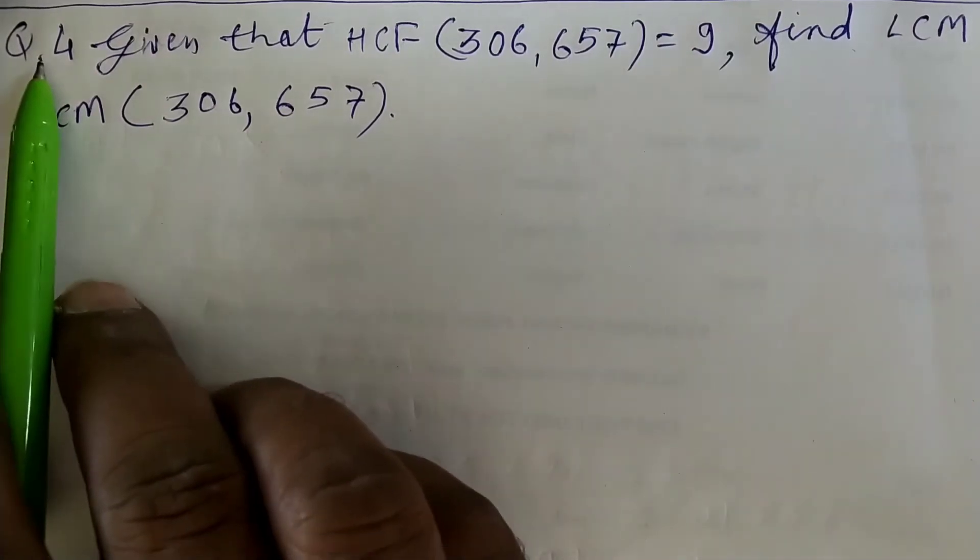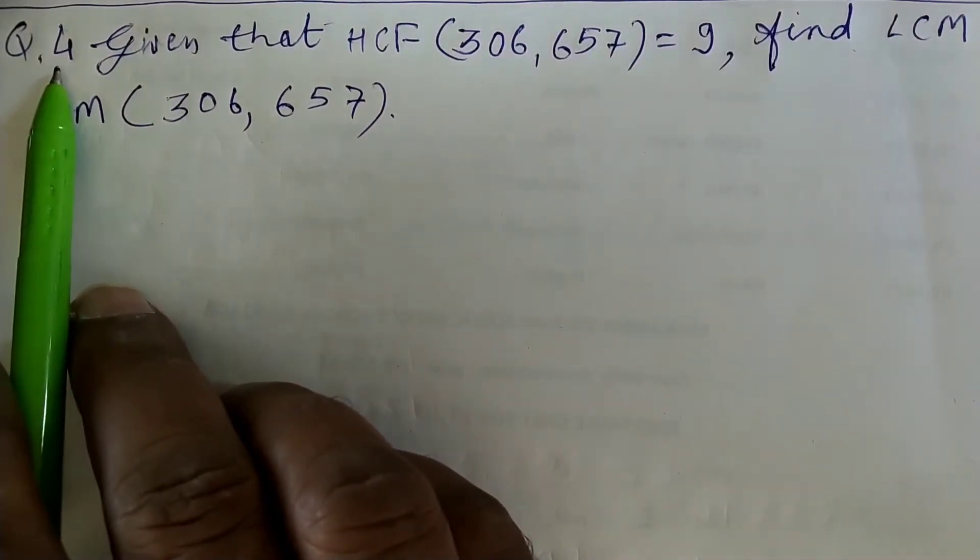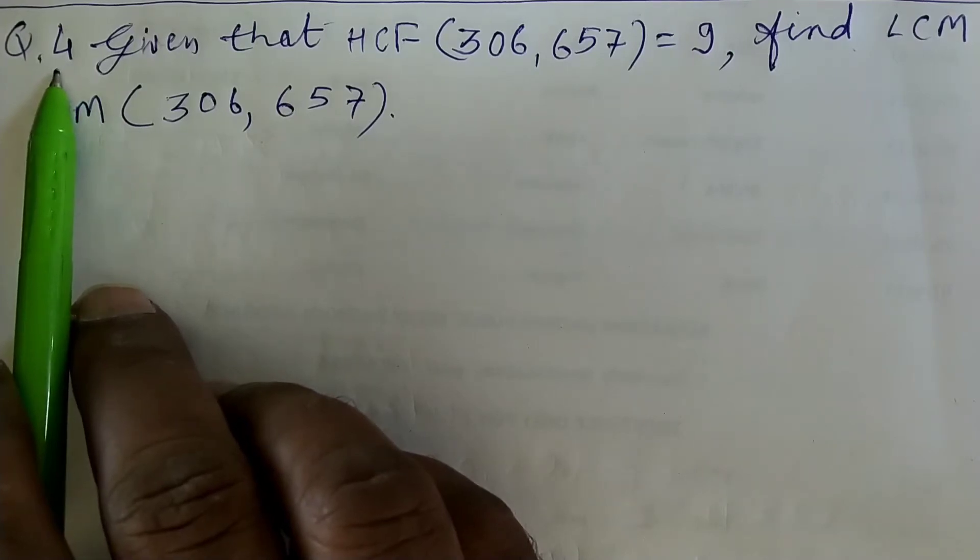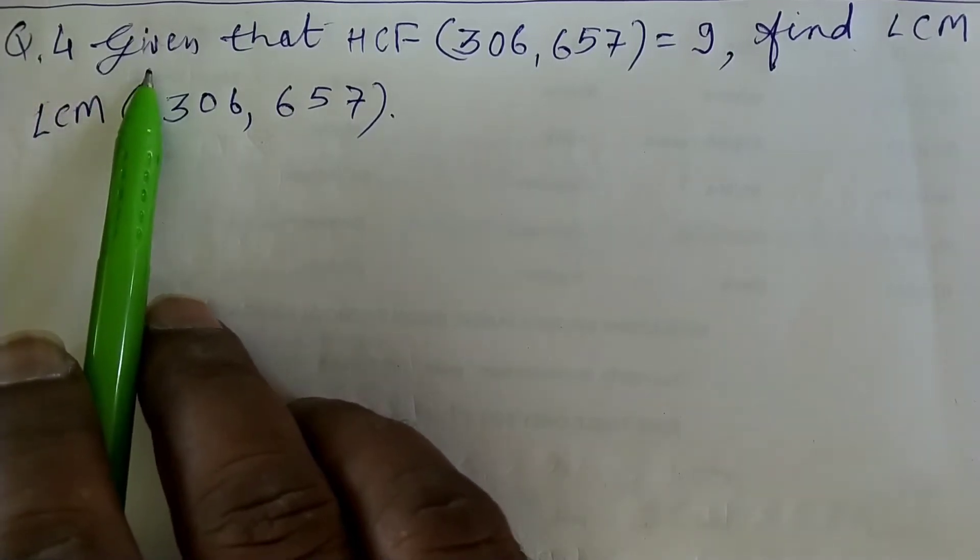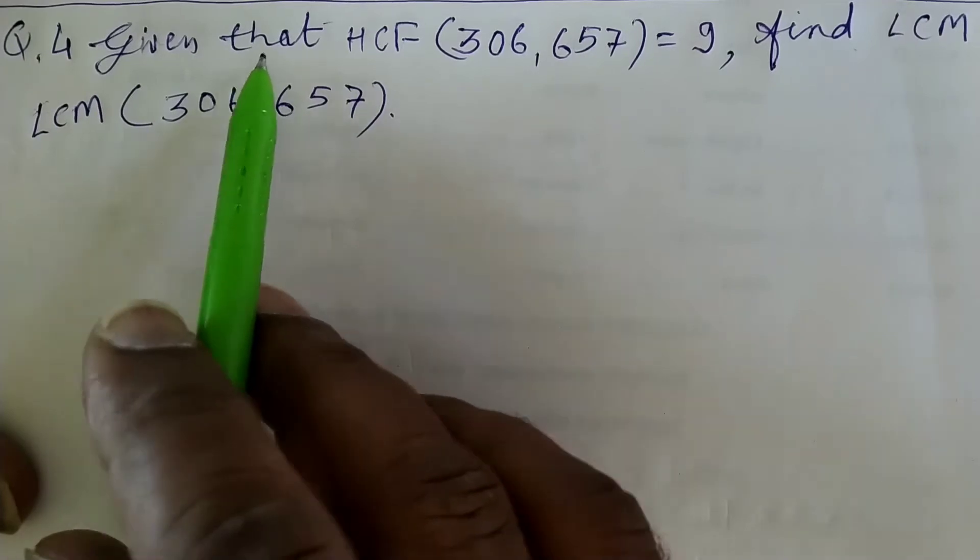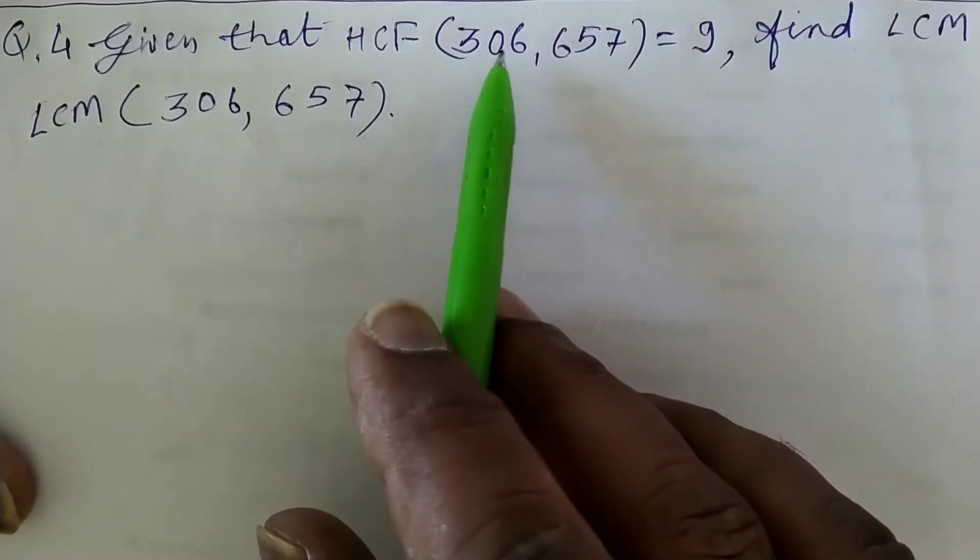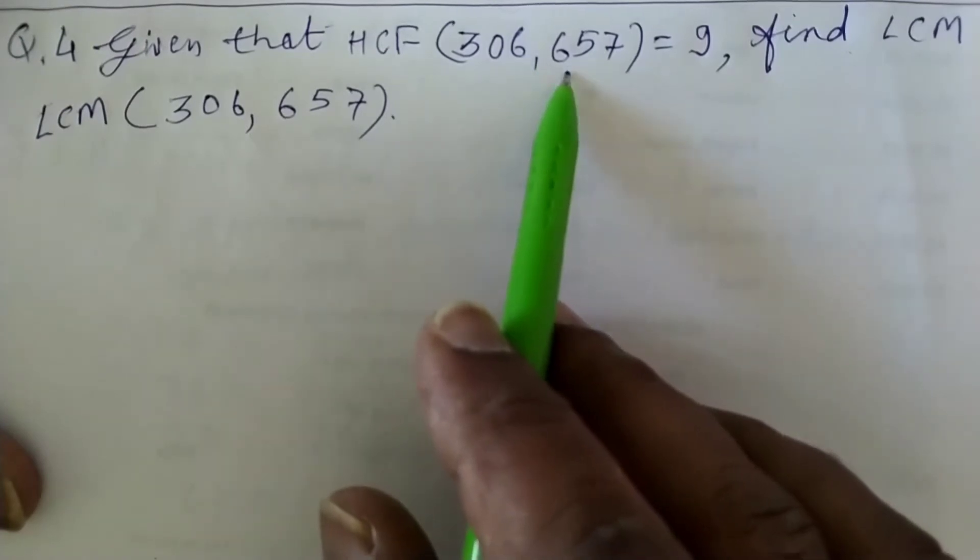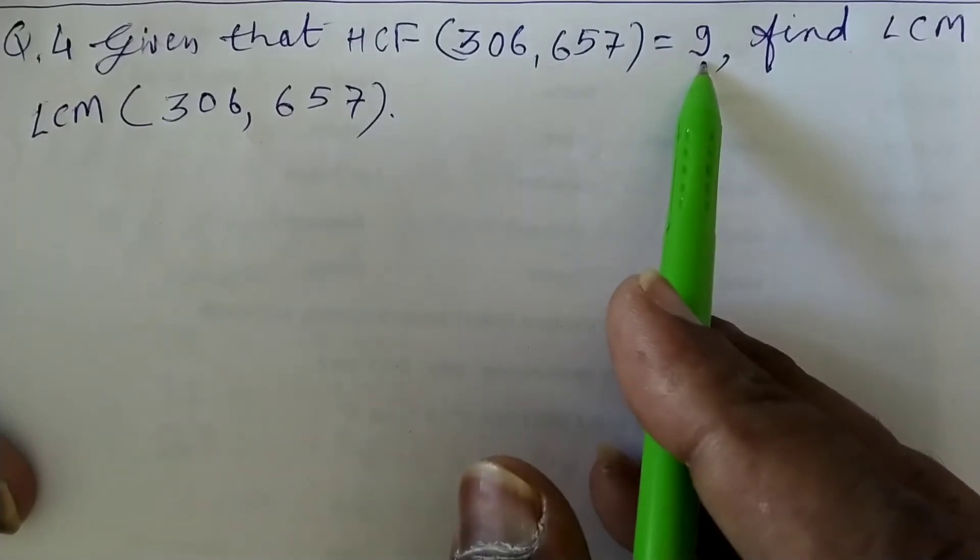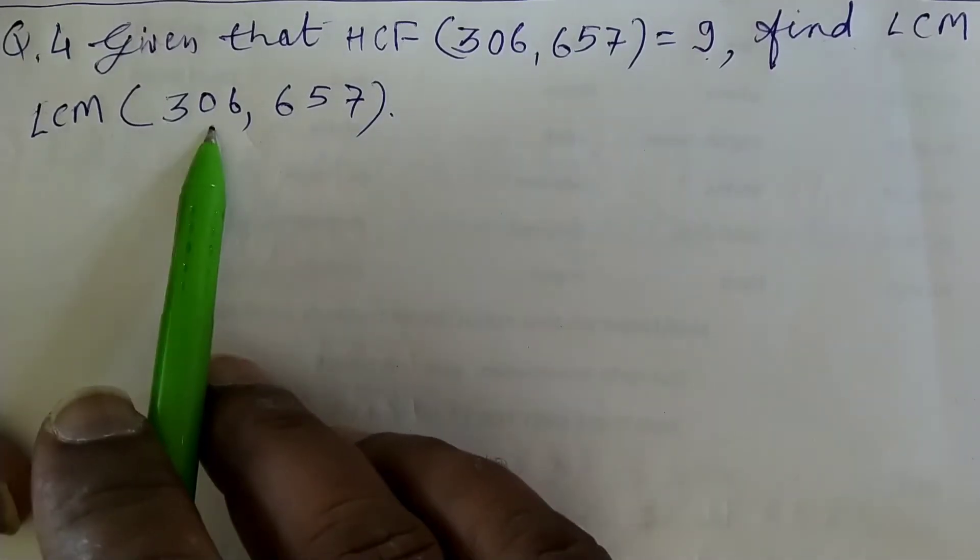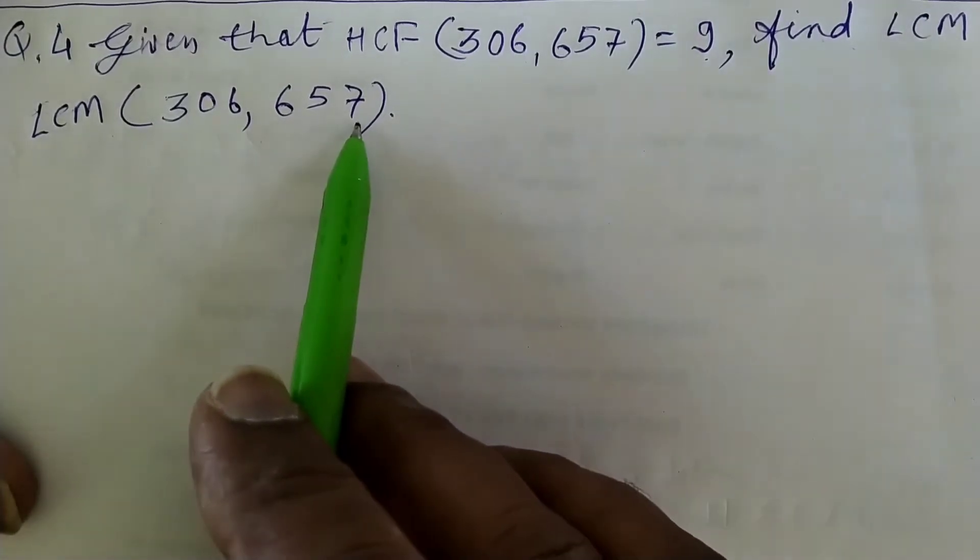My dear students, question number first of exercise 1.2, question number fourth. We have given that HCF of 306 and 657 is 9, find LCM of 306 and 657.